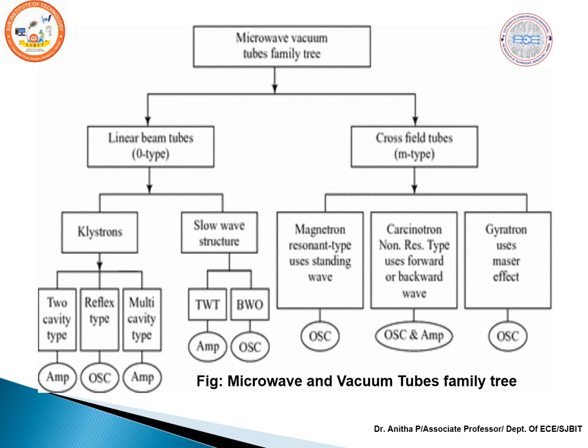Under linear beam tubes, there are slow wave structures and cavity structures like klystrons. Klystrons are classified into three types based on the number of cavities: reflex klystron (single cavity, used as an oscillator), and two-cavity or multi-cavity klystrons (used as amplifiers). Slow wave structures include the traveling wave tube and backward wave oscillator. Cross-field tubes include magnetron, gyrotron, and carcinotron.